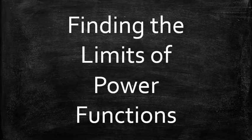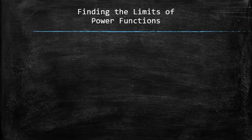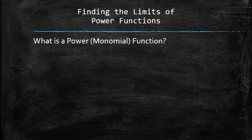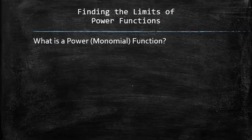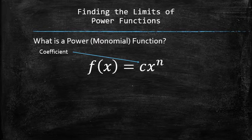Next, we will discuss how to find the limits of power functions using the analytic approach. First, let's figure out what a power function, also known as a monomial function, looks like. All power functions have this form: a non-zero number c multiplied by x raised to some natural power n. The number in the front is called the coefficient, and the power of x is called the degree.